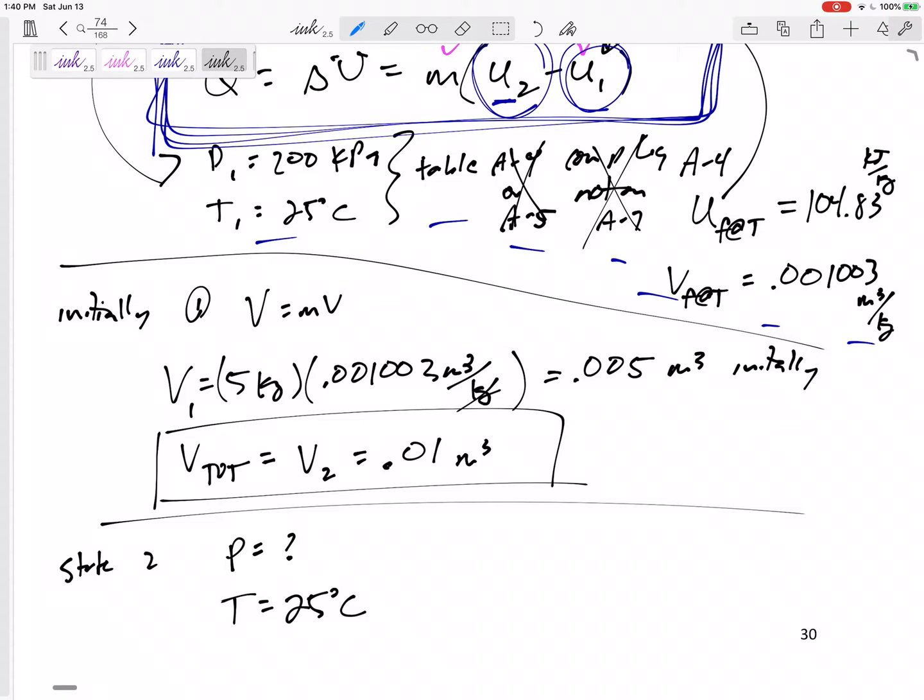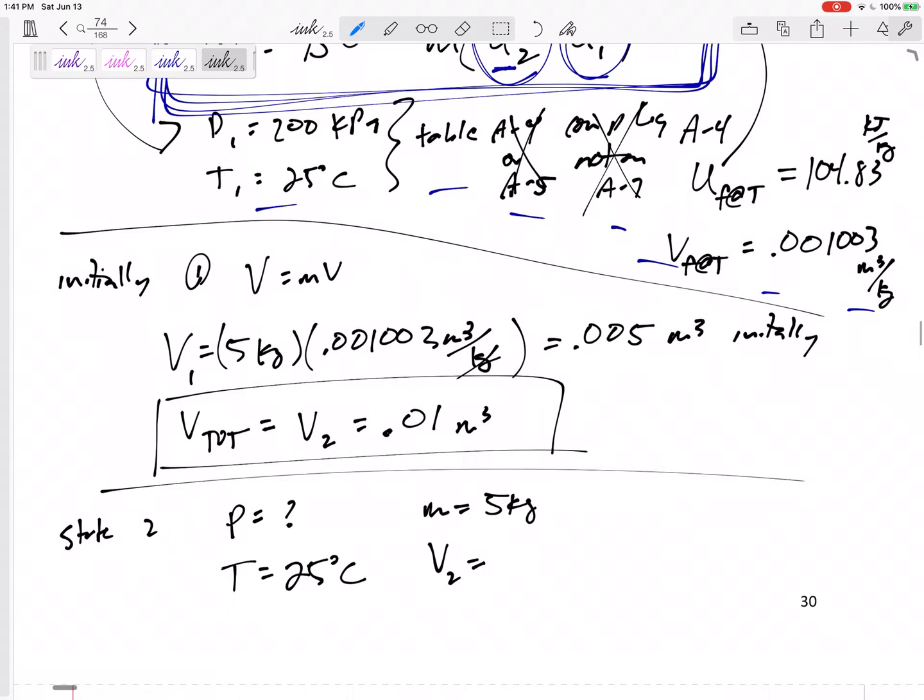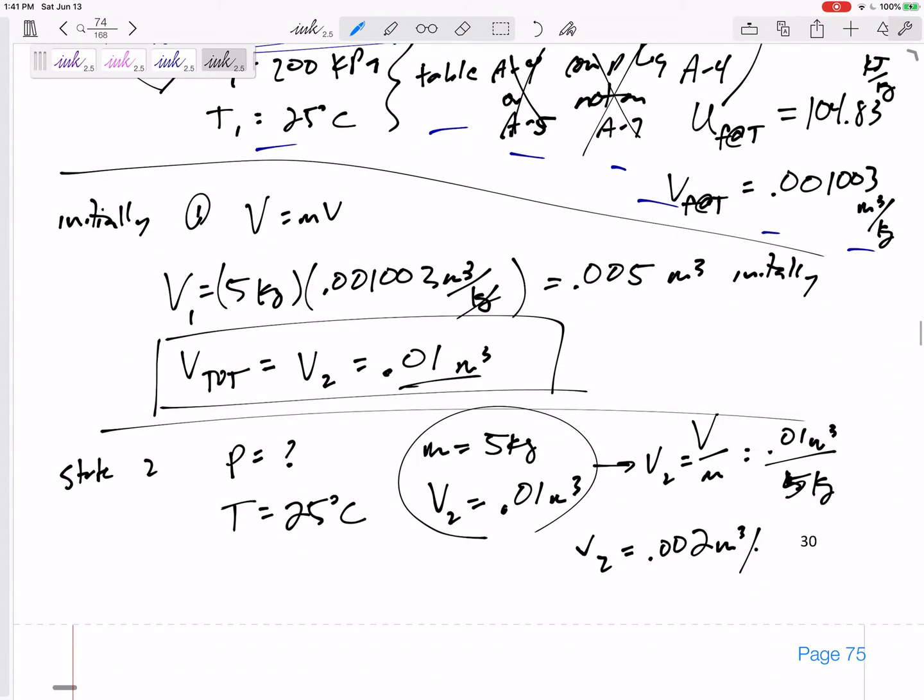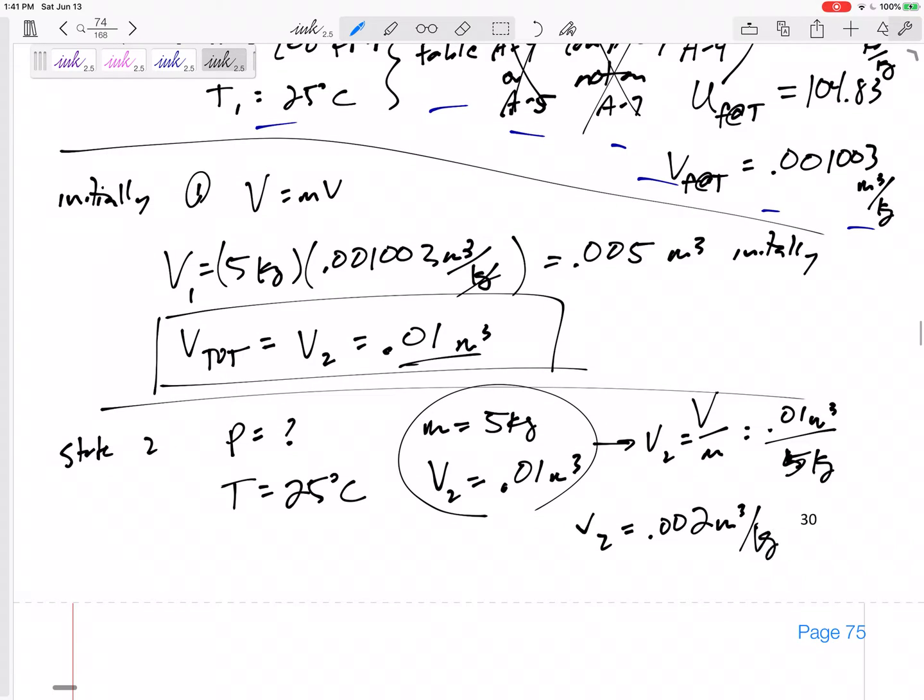But what have we done all semester? Do we maybe sorta kinda know the specific volume? Yes, we know the mass, five kilograms. And if we didn't know this, we would have had to have calculated this. We know the volume 0.01 meter cubed. With those, we know that the lowercase V, big V over M, 0.01 meter cubed over five kilograms, V2, 0.002 meters cubed per kilogram.